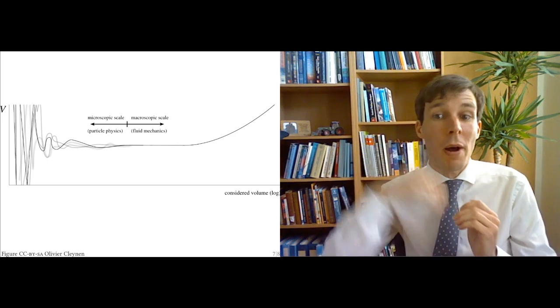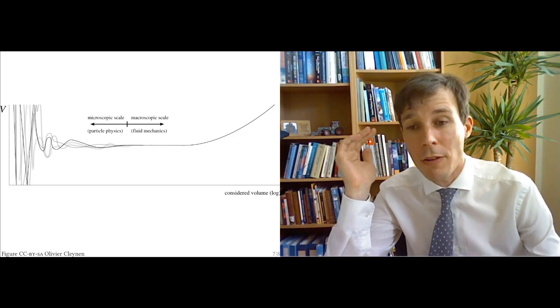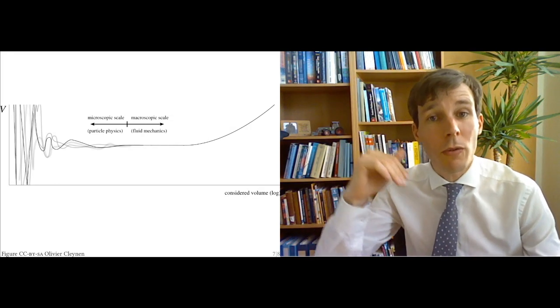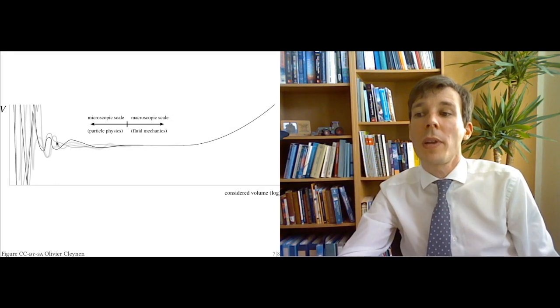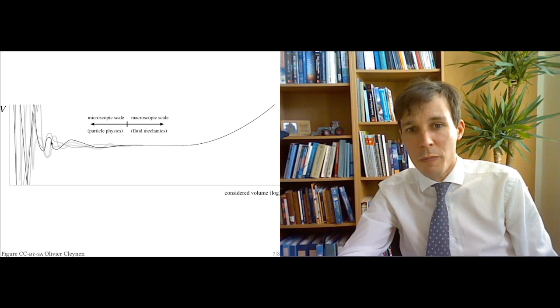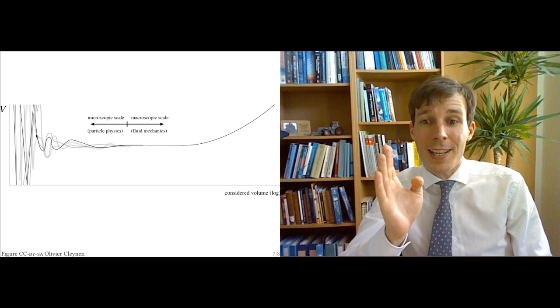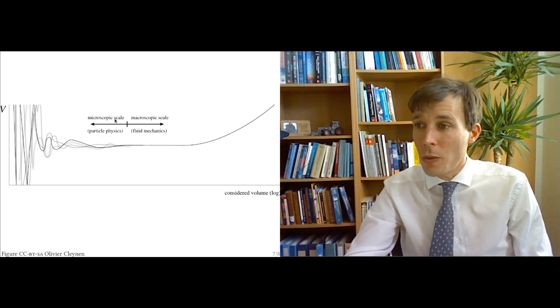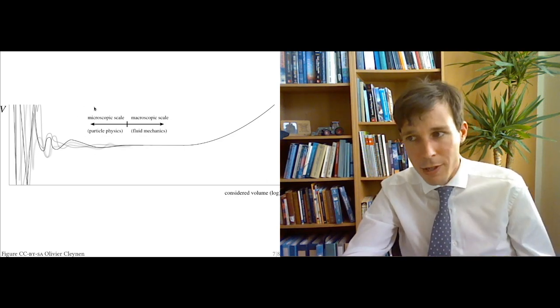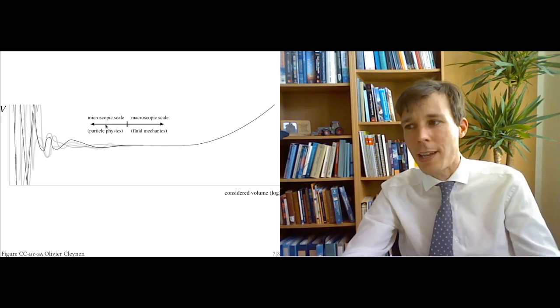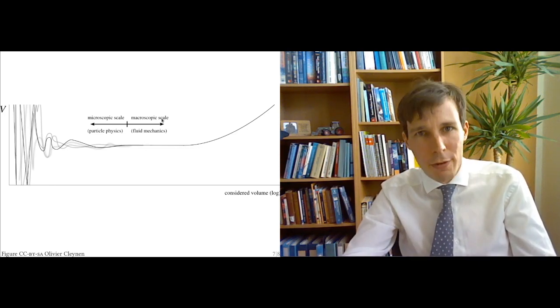Because suddenly my thermometer measures nothing at all. And then comes a molecule and bumps up the value to a very high value. And then nothing at all, and so on and so forth. And so we get really odd variations of properties if our measurement volume is too small. In fluid mechanics, we stay clear of that zone. So we never want to enter what we call the microscopic scale, where we have particle physics, and we stay safe on the macroscopic scale.